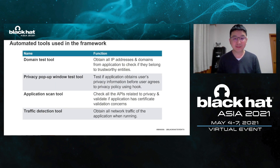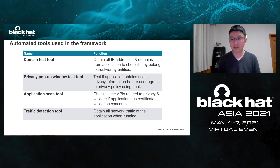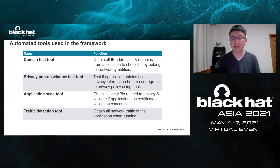Hello everyone, I'm Zhang Qing. Let me introduce several automated tools in the framework. The first is the domain test tool, which obtains all IP addresses and domains from an application to check if they belong to trustworthy entities. The second is the privacy pop-up window test tool, which tests if an application accesses user privacy information before the user agrees to the privacy policy, using a hook. The third is the application scan tool, which checks all APIs related to privacy. The fourth is the traffic detection tool, which captures all network traffic from the application when running.